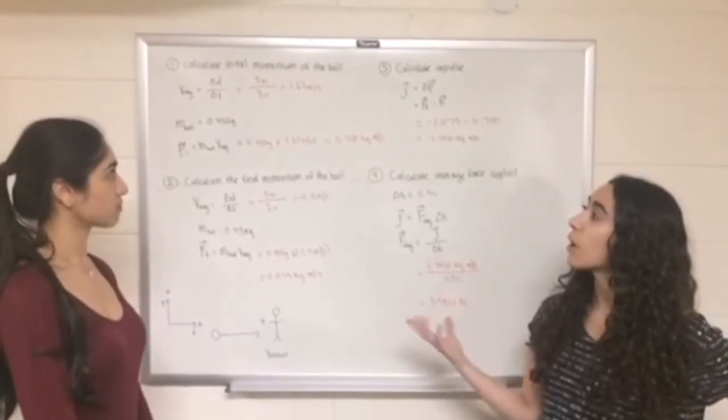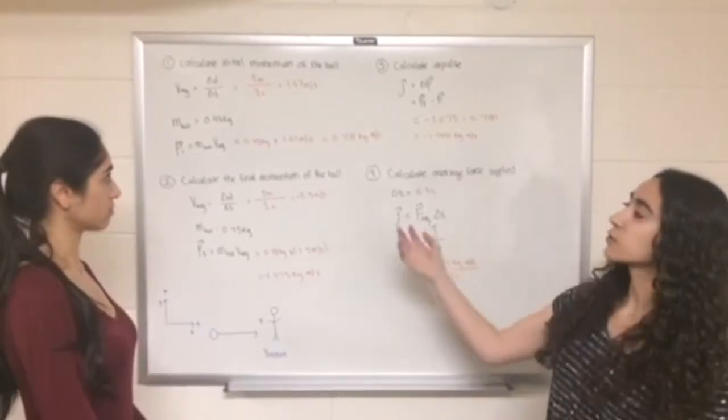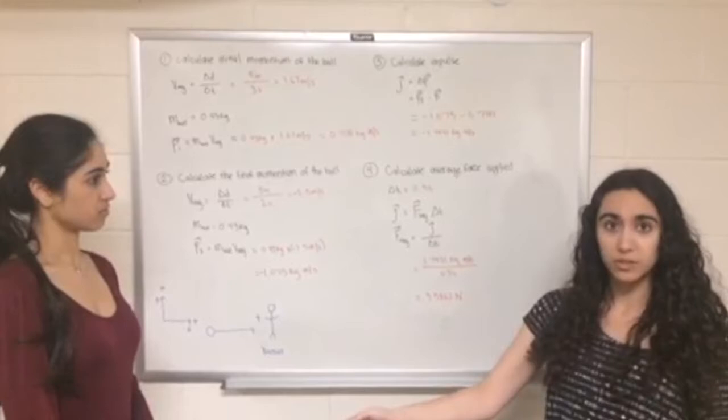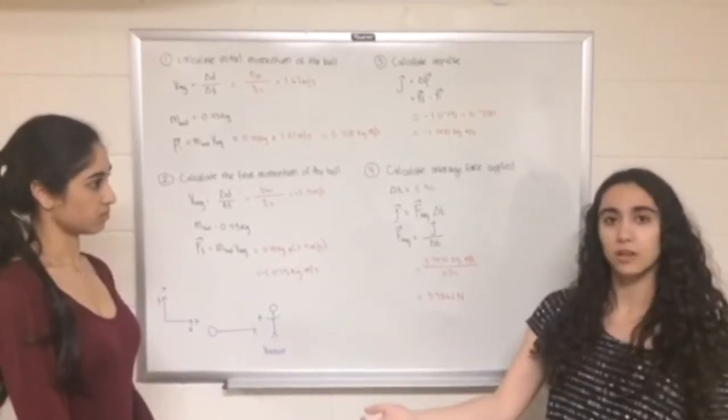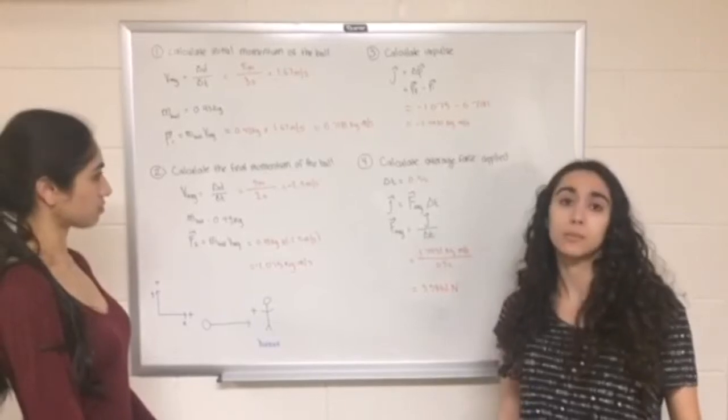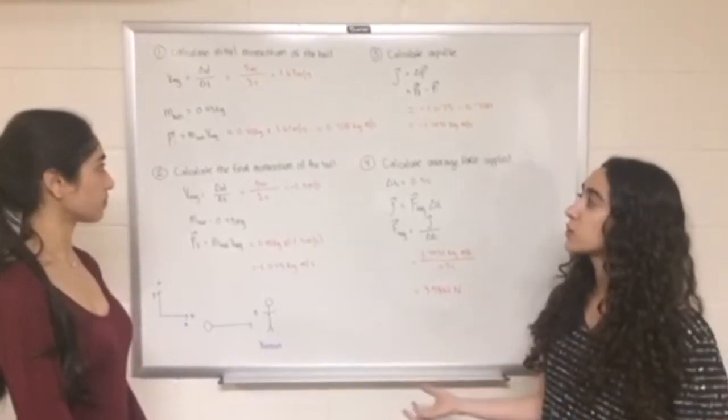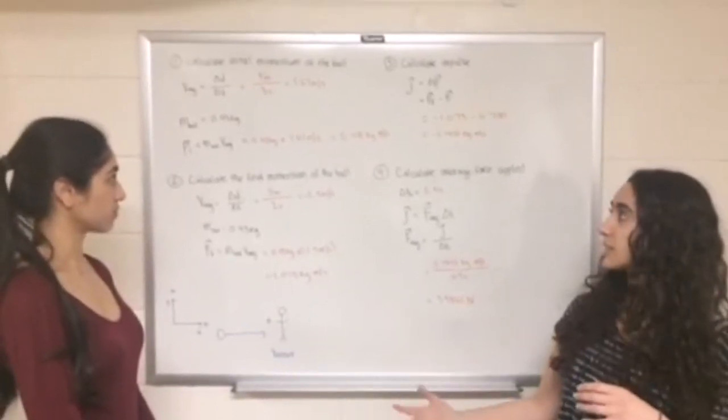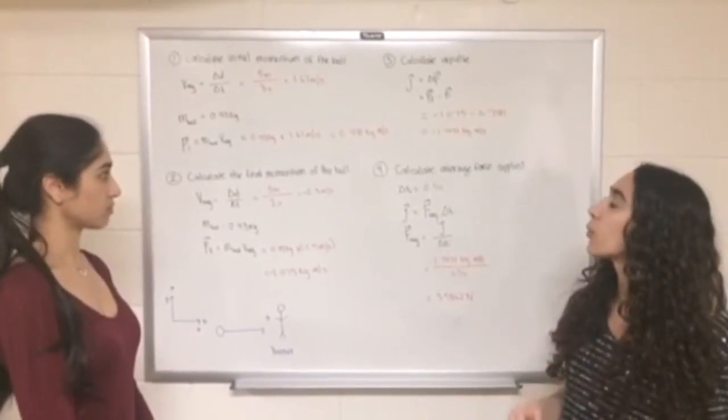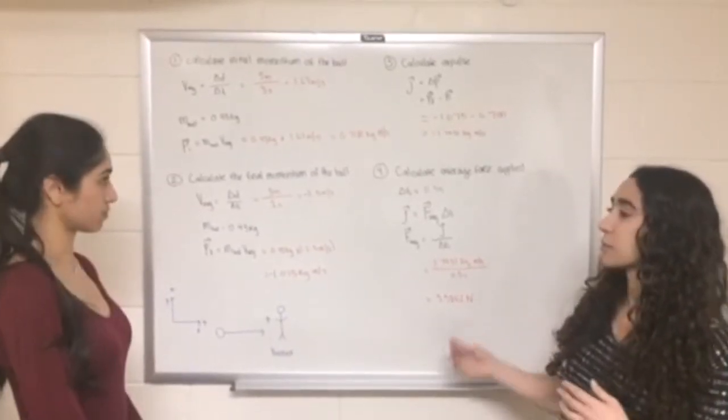We knew the mass of the ball was 0.43 kilograms, and we could find the average velocity of the ball by taking the distance, which was 5 meters, and dividing it by the time it took to get there, which was 3 seconds, and we got a velocity of 1.67 meters per second. Then we were able to calculate the initial momentum by doing the mass of the ball times the average velocity, which gave us a momentum of 0.7181 kilograms meters per second.